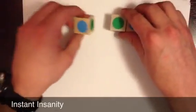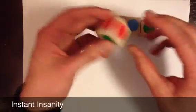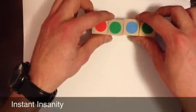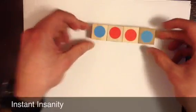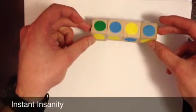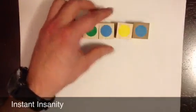So, the instant insanity game, we've got four cubes with four colors, one on every side. The goal of the game is to arrange those cubes so that this resulting shape on every side, all colors come four times.